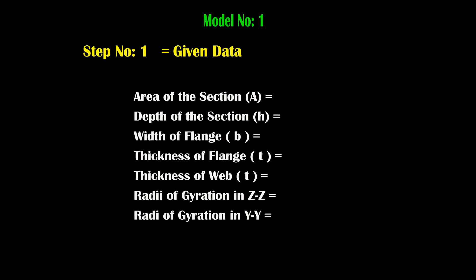Step number 1 is 'Given.' The first and foremost step to solve any question from Chapter 4: area of the section A (units: mm²), depth of the section H (units: mm), width of the flange (units: mm), thickness of the flange, thickness of the web, radius of gyration in ZZ direction (units: mm), and radius of gyration in YY direction (units: mm). If original length is also given, include it in the given data.